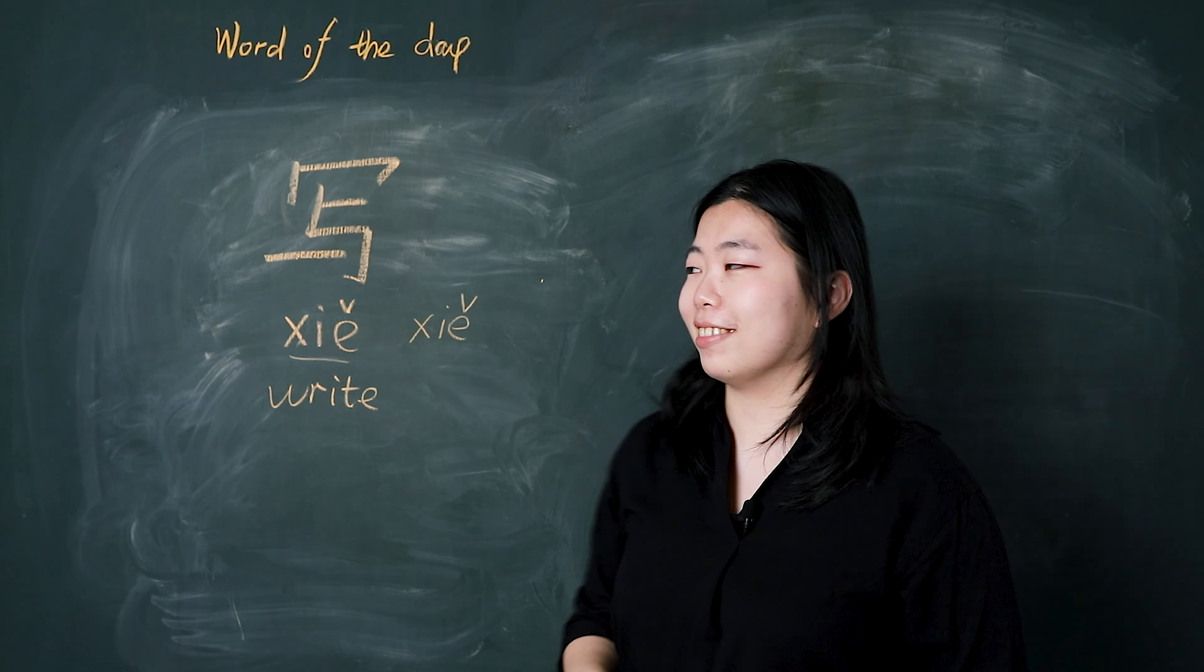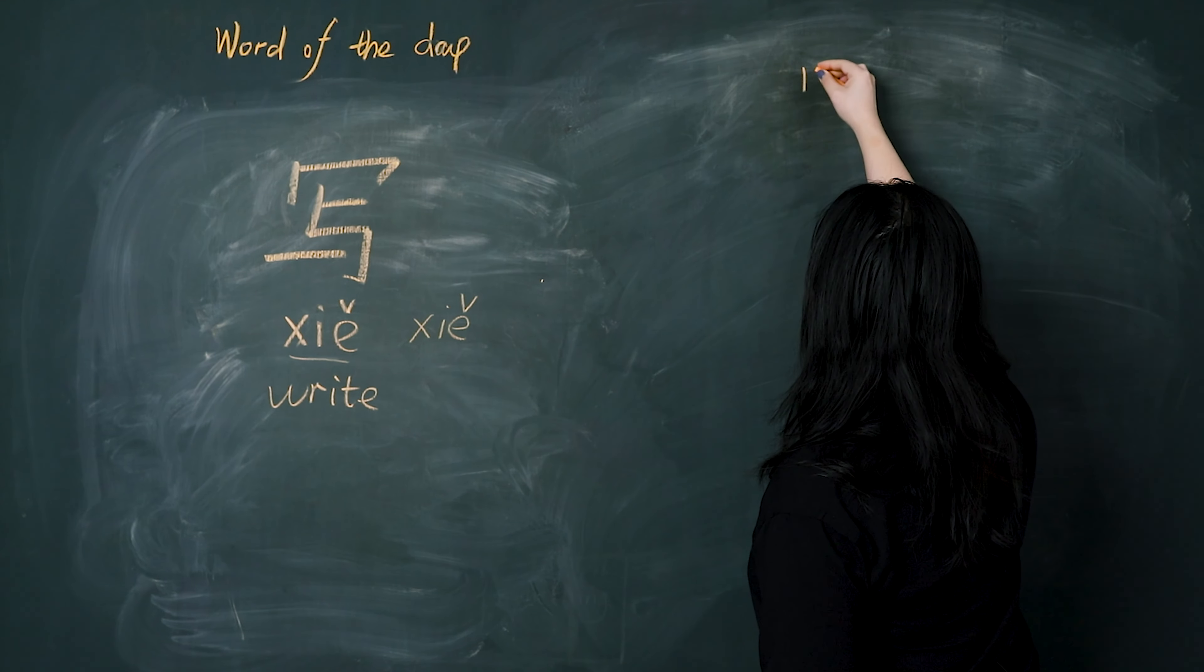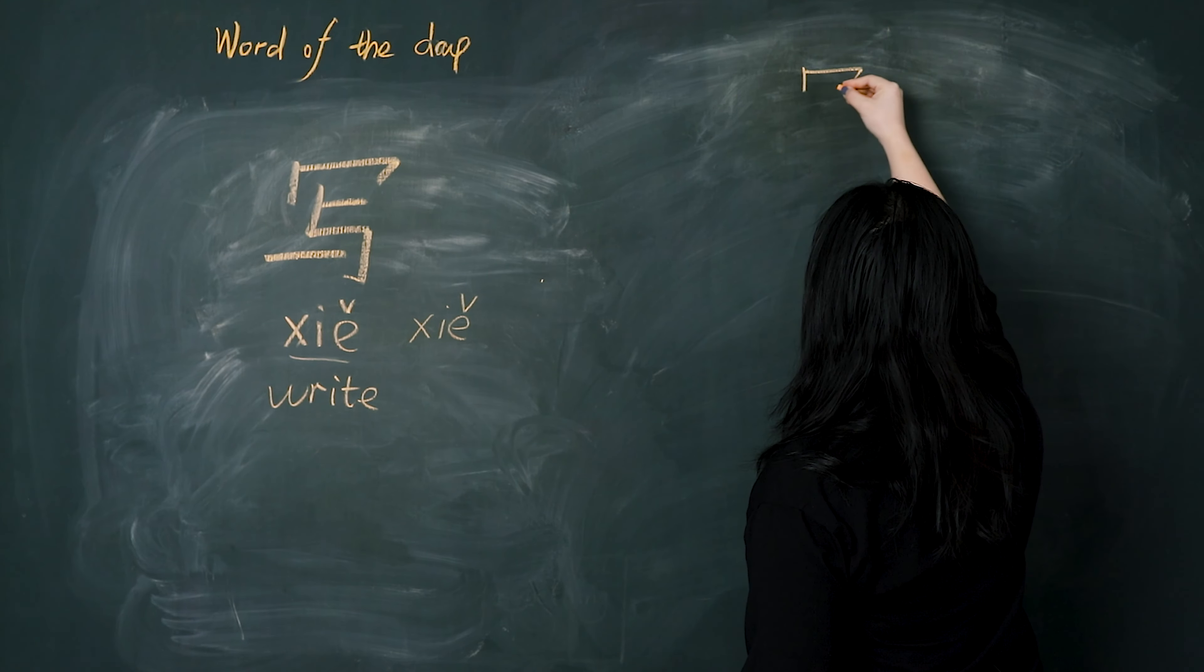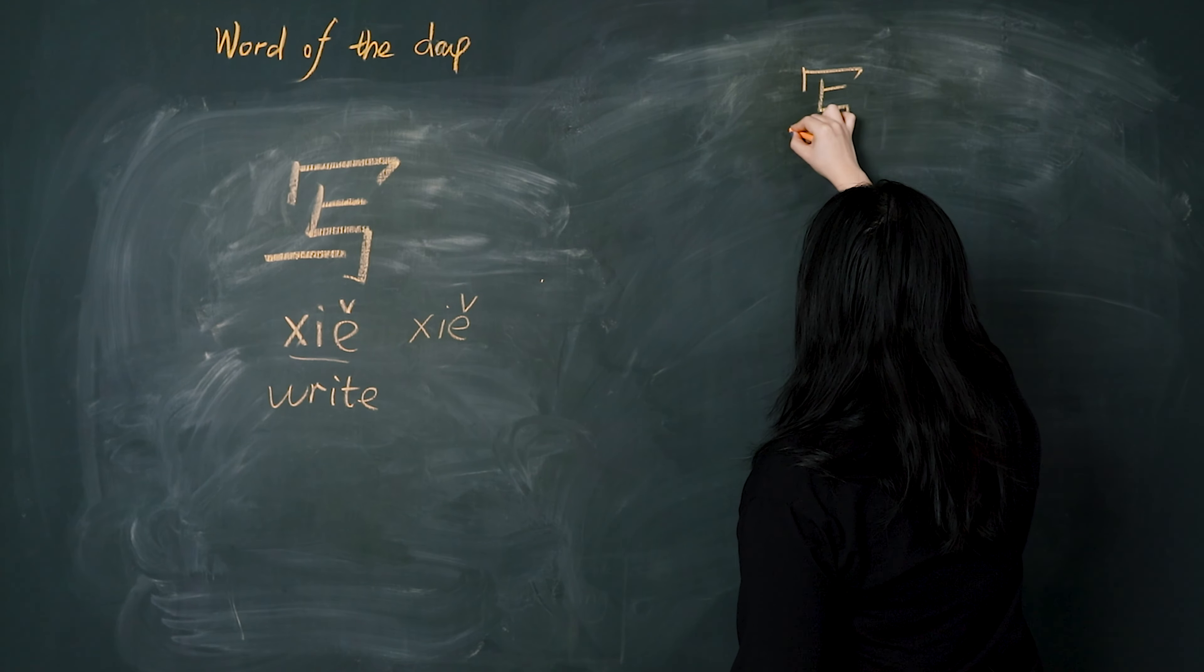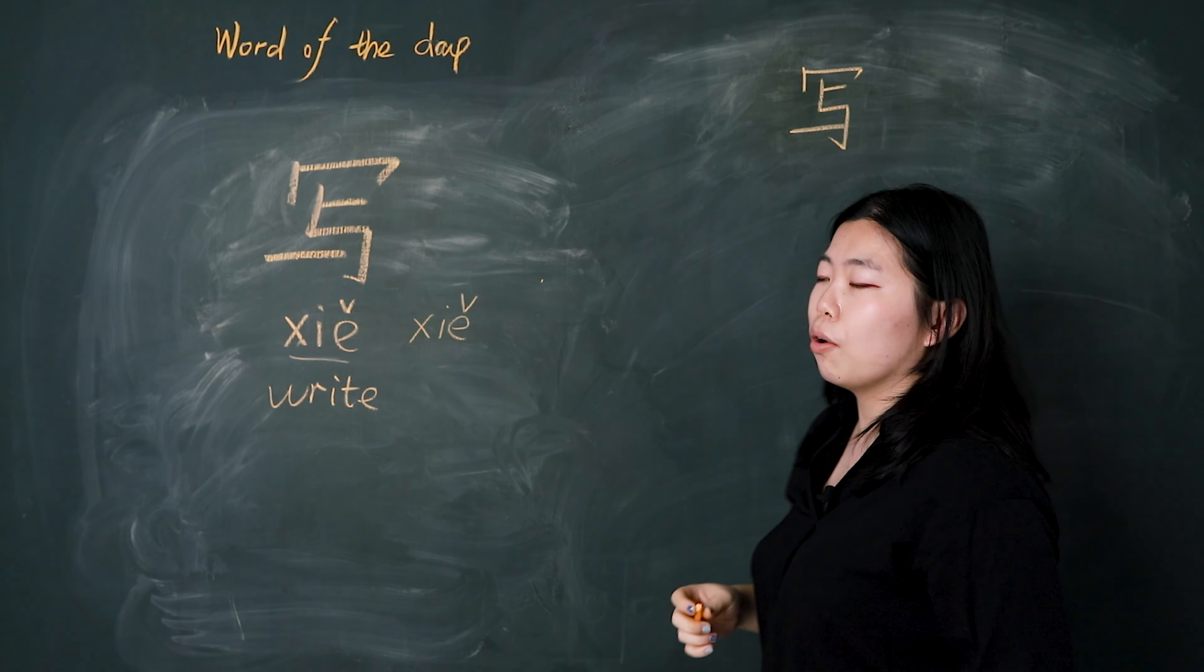Now, let's write it. 竖 很撇 横 竖 折 折 勾 So pay attention.